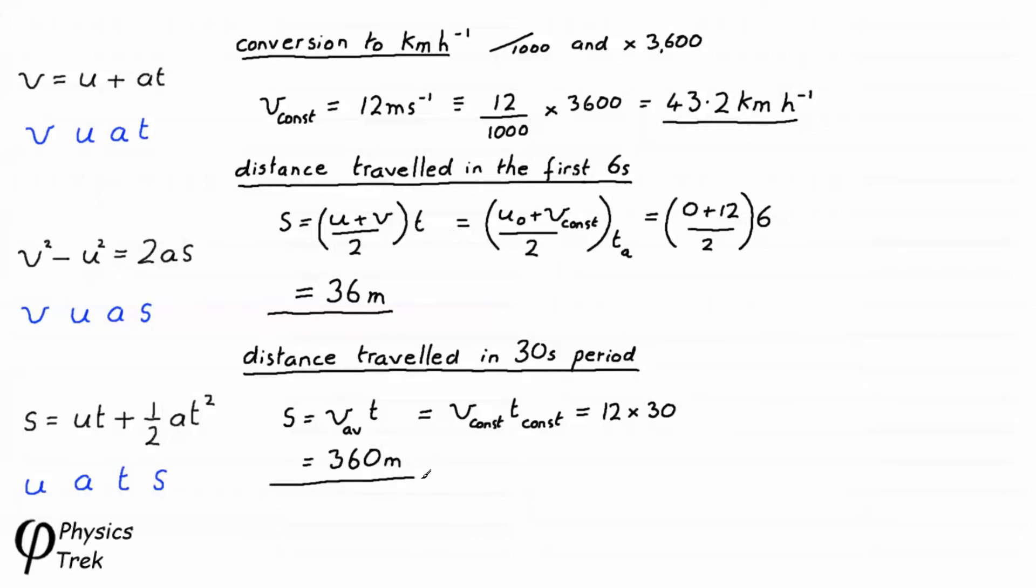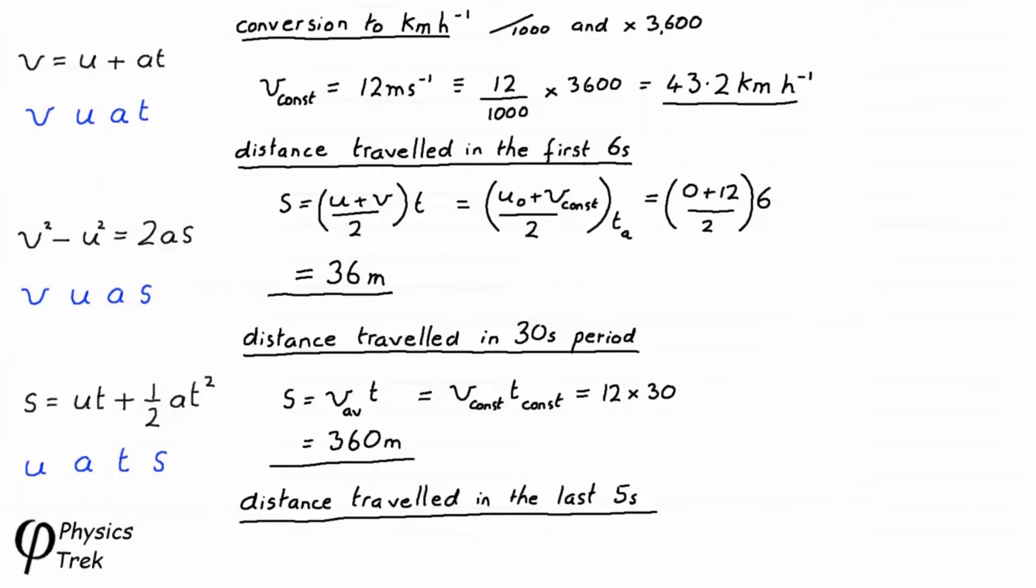And now to calculate the final distance: the distance traveled in the last five seconds. This last bit is a bit tricky, not straightforward like the last two calculations. The problem is that there is not enough information to calculate the distance. We only have the velocities at the start and end of the retardation and the time taken. In other words, U, V, and T. To use any of the equations with S in them, we must have a, the retardation. So here is our calculation of a.